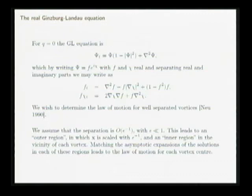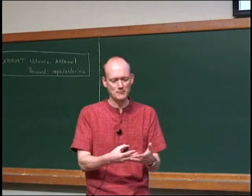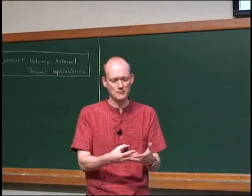I want to give you two of the ingredients first before getting to the motion of spirals towards the end. The first thing I want to tell you about is just to remind you how the calculation goes for the real case when q is equal to zero — I'll give you a flavor of the calculation. Then I'm going to look at the q non-zero case but for one steady spiral. And then at the end I'll try to show you what happens when you put them together.